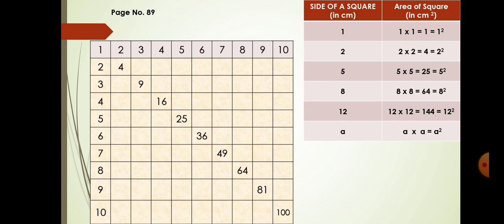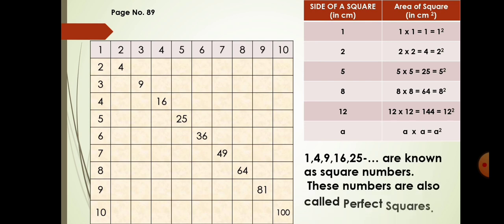If the side is 2, then it is 2 squared. If it is 5, then 5 squared. If it is 8 centimeters, it is 8 squared. If it is 12 centimeters, it is 12 squared — any number raised to the power 2. So 1, 4, 9, 16, 25, 36, 49, 64, 81, 100 and so on are known as square numbers. These numbers are also called perfect squares.